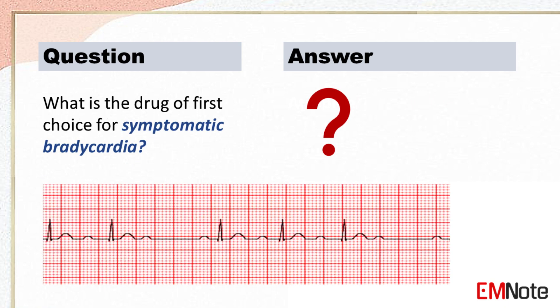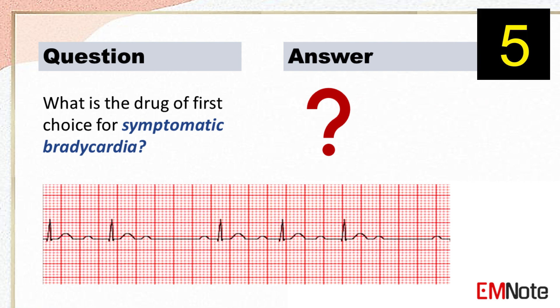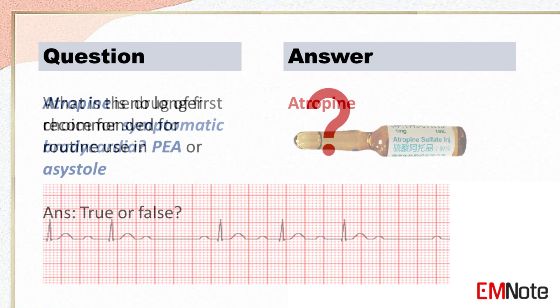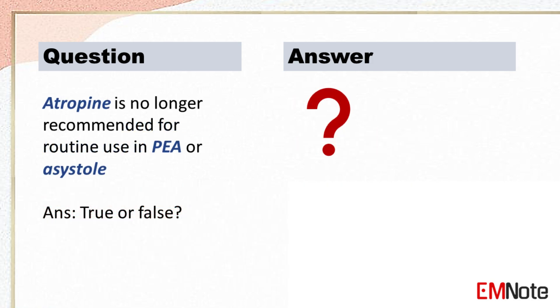What is the drug of first choice for symptomatic bradycardia? The drug of first choice for symptomatic bradycardia is atropine. Note: Atropine is no longer recommended for routine use in PEA or asystole.